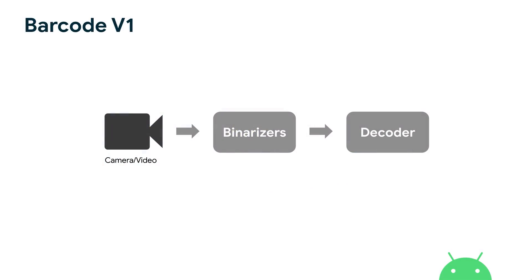Looking back at what V1 actually does in the pipeline: the V1 barcode pipeline is quite simple with only two stages. The first stage converts the image to grayscale — a black-and-white image — and sends it to the decoder. If the decoder cannot solve the problem due to the challenges mentioned, it simply cannot solve it correctly.